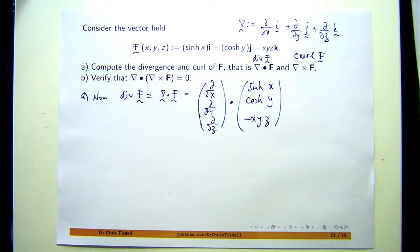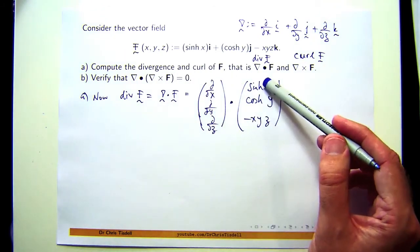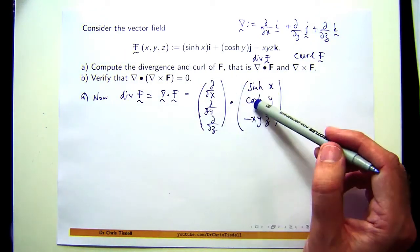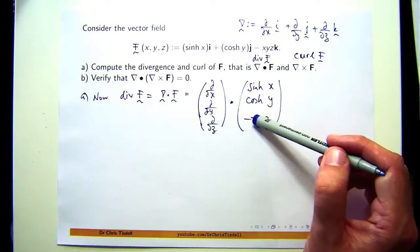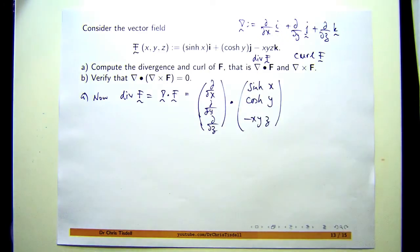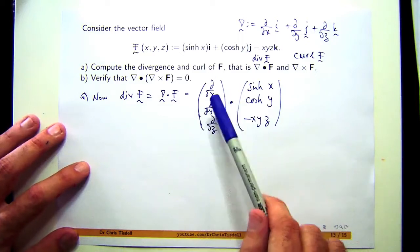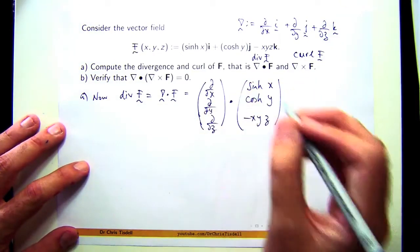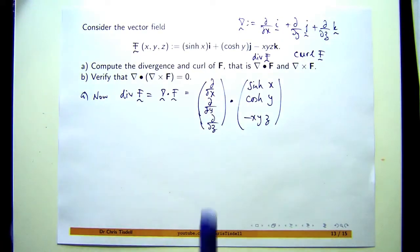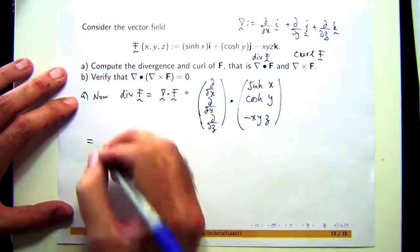Then you would expand it like you would with any dot product. You take the first component and it acts on the first component over here. The second component acts on the second component, third component acts on the third component, and you add them all up. We're not multiplying here, these ddx's and ddy's are acting on these functions.